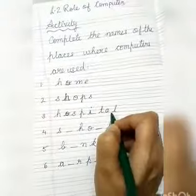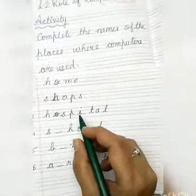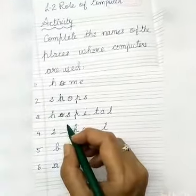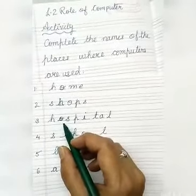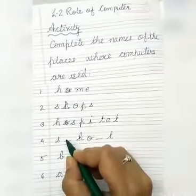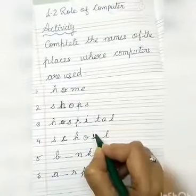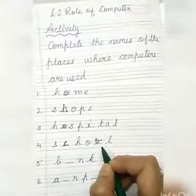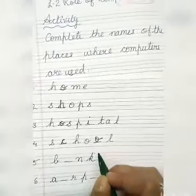Number 3 is H-O-S-P-I-T-A-L, hospital. Yesterday we learned that computers are used in hospitals to detect many diseases, to take test reports, and also to check your eyesight. Number 4 is S-C-H-O-O-L. In schools also we see computers are used regularly — teachers are using them and children are also using them during their computer period.